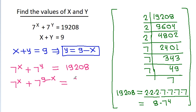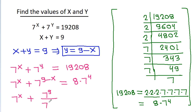So 19,208 is equal to 8 times 7 power 4. Therefore, 7 power x plus 7 power (9 minus x) — which equals 7 power 9 divided by 7 power x — is equal to 8 times 7 power 4.